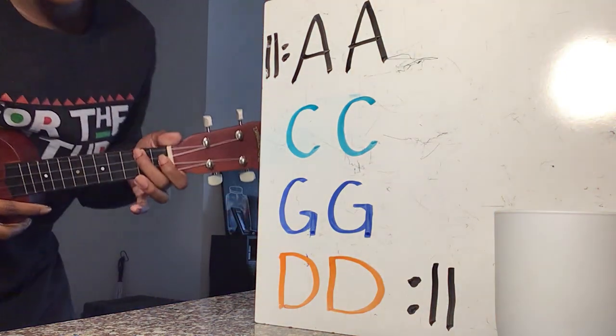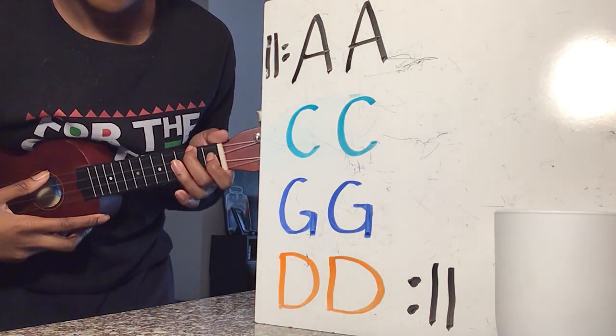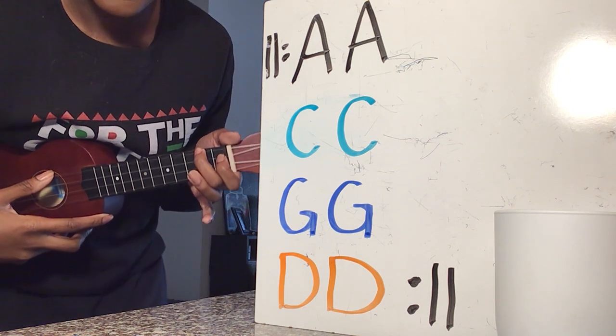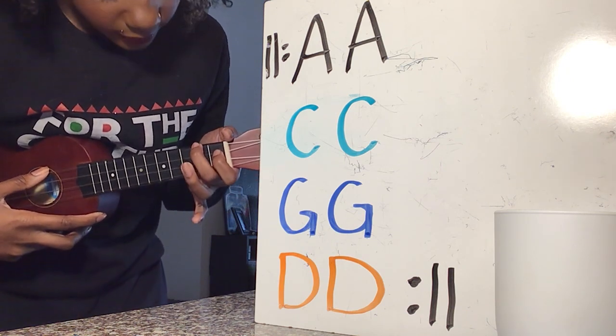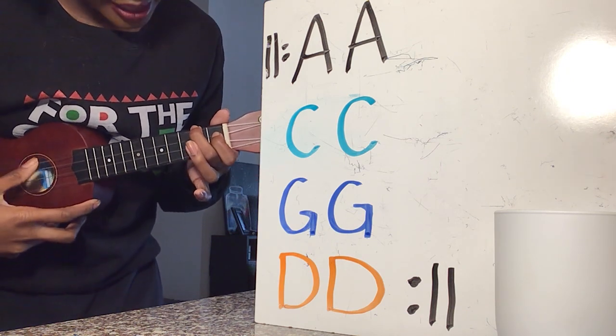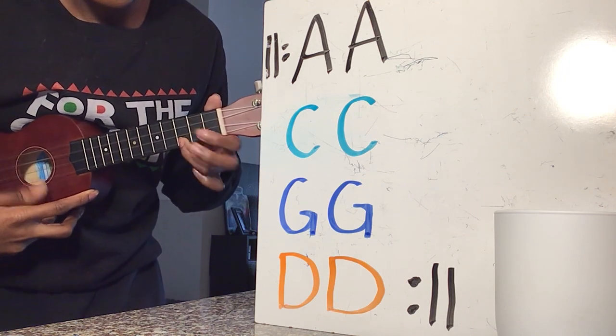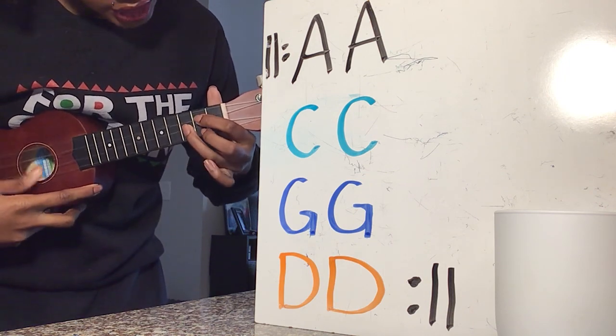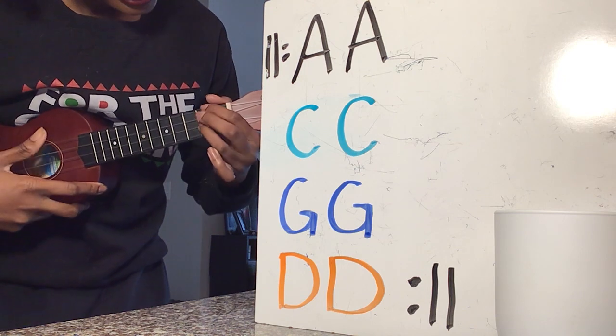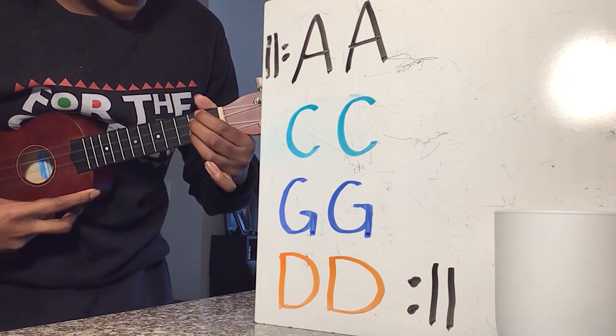So let's practice it really, really slow. One, two, ready slow. A, A, C, C, G, G, D, D. Repeat. A, A, C, C, G, G, D, D.